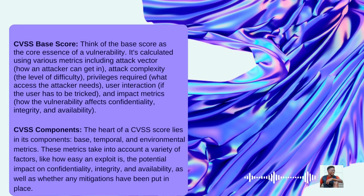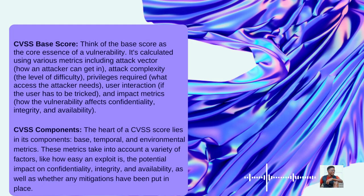Additional base score metrics include privileges required — what access the attacker needs — user interaction, meaning if the user has to be tricked, and impact metrics, which describe how the vulnerability affects confidentiality, integrity, and availability.